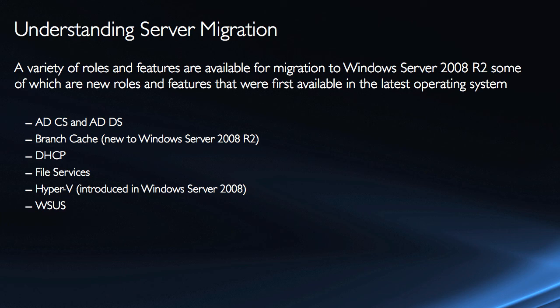BranchCache is new to Windows Server 2008 R2, so the only time you're going to be migrating that is if you're probably transitioning to new server hardware and installing a different machine. DHCP can be migrated with the server migration tools. File services, Hyper-V — which was introduced in Windows Server 2008 but can be upgraded to Server 2008 R2 — as well as WSUS and print services can all be migrated. That does not mean that you can't upgrade other systems; it simply means those other systems may need to be done manually.